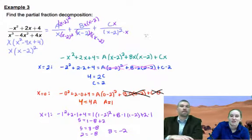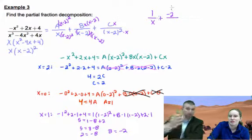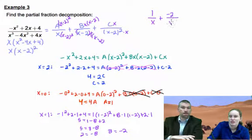We come back up here and fill in A, B, and C. So A was one, that's one over x, plus B which is negative two, and then C is two.